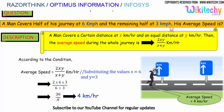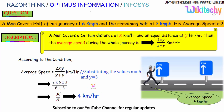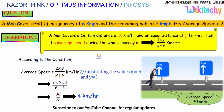So with 6 km and 3 km: x equals 6 and y equals 3. So 2 into 6 into 3 divided by 6 plus 3 gives us 36 by 9, which is 4 km per hour. So the average speed is 4 km per hour.